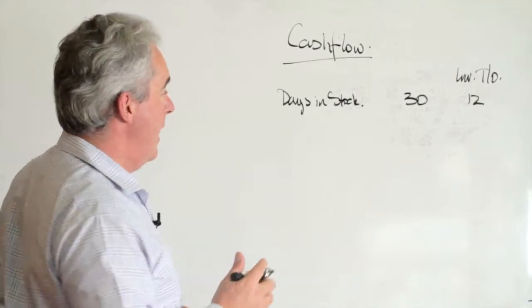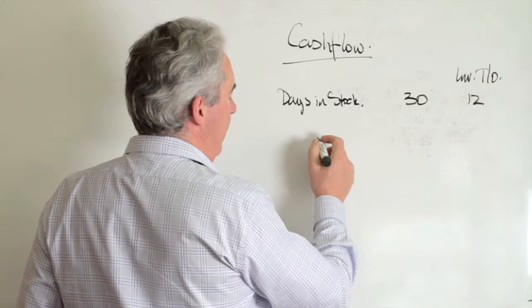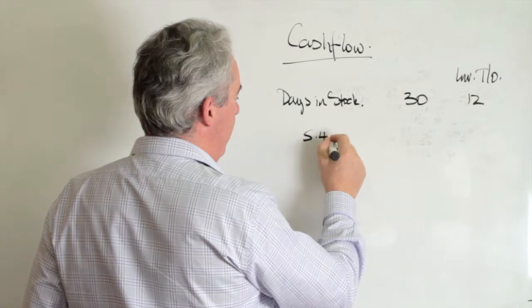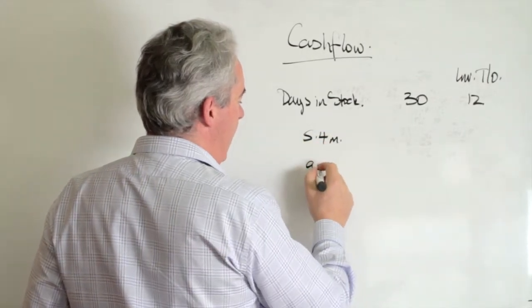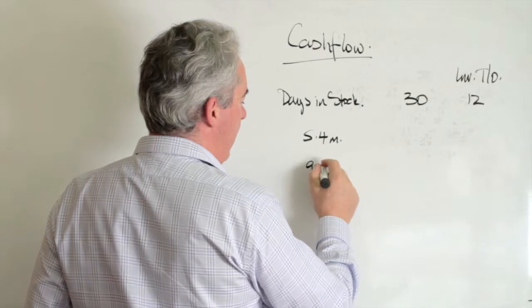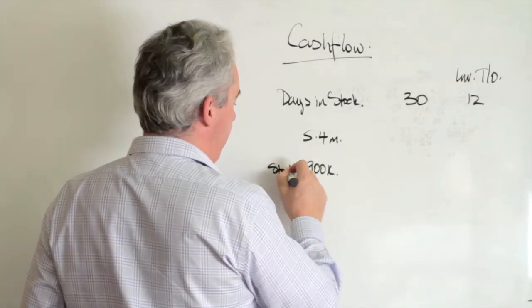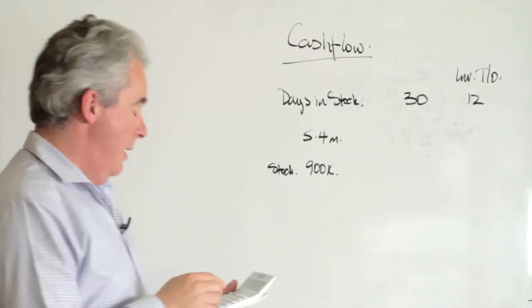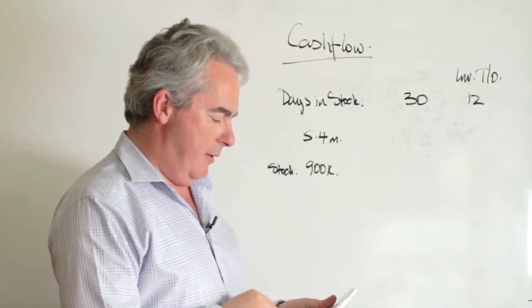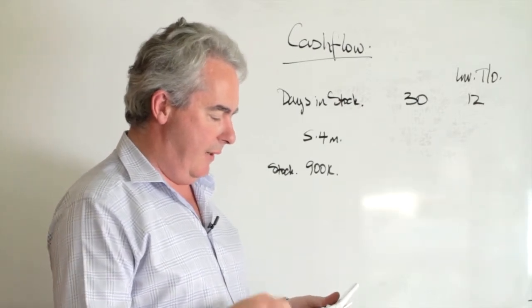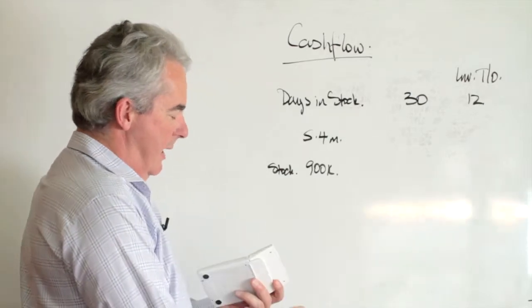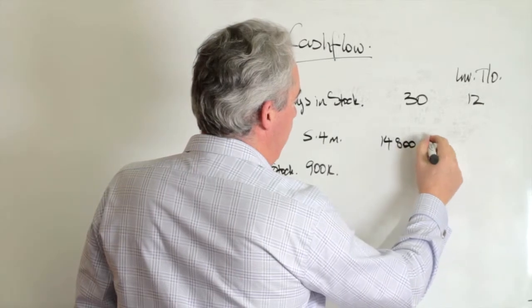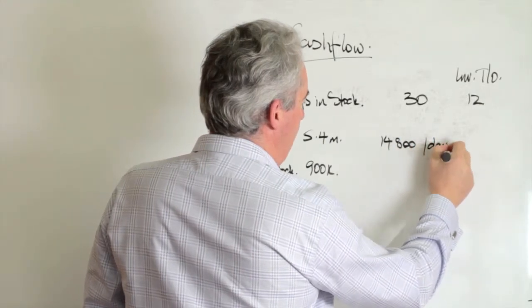One of our customers a number of years ago, their sales were about $5.4 million. They had at that point in time about $900,000 worth of stock. We divide that: $5,400,000 divided by 365. They sell roughly $14,800 worth of stock per day at cost.